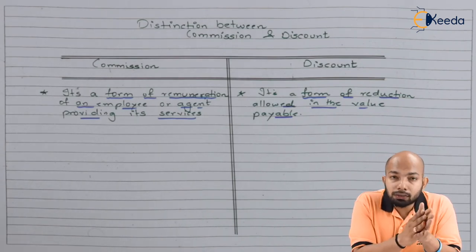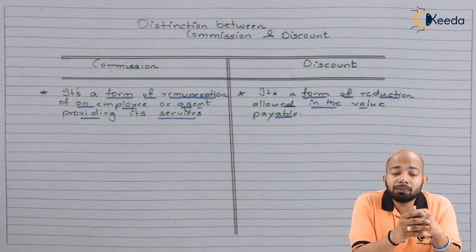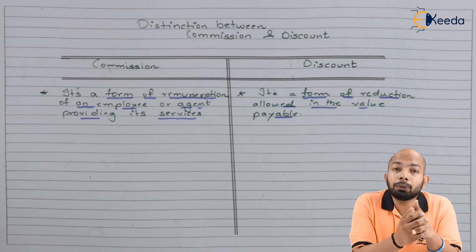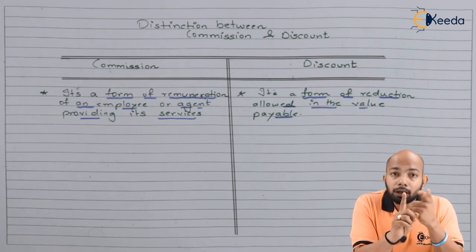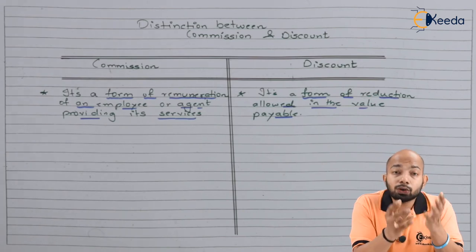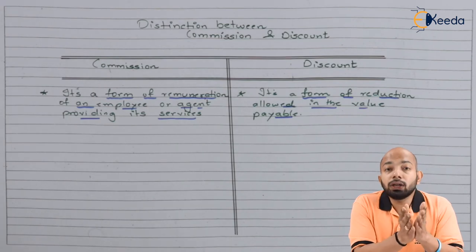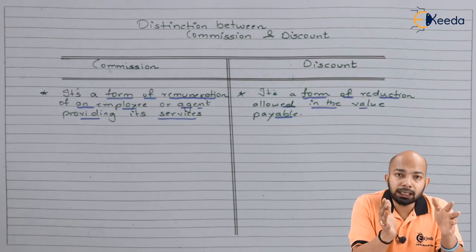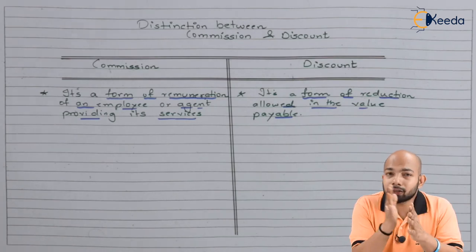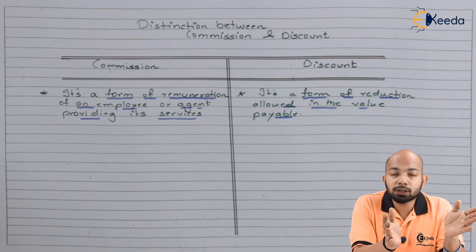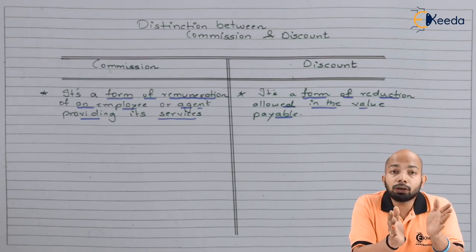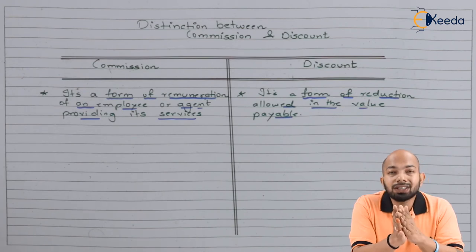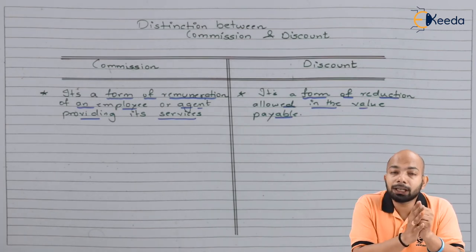Both commission and discount are forms of income. Commission is income receivable for the person providing the services. Discount is a kind of notional income — for example, if Mr. A is supposed to pay 10,000 to Mr. B and is allowed a discount of 1,000, then instead of paying 10,000, Mr. A will only pay 9,000. The amount that is supposed to go out doesn't go out completely; a marginal amount is retained, which is the discount or rebate.